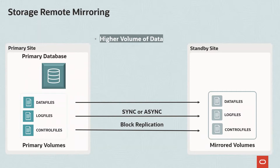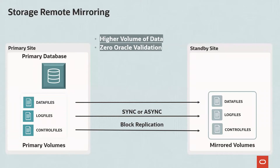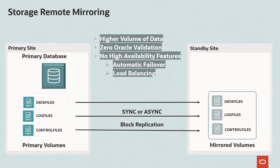Storage Remote Mirroring performs zero Oracle validation. It only performs physical checksum validation, providing limited isolation between mirrored storage copies. Limited isolation and zero Oracle validation means that physical corruption written to primary storage, as well as administrative errors — for example, accidental deletion of data files or log files — are replicated to remote storage, making both copies unusable. Storage Remote Mirroring provides basic data protection and disaster recovery capabilities but may not offer advanced high availability features such as automatic failover or load balancing.